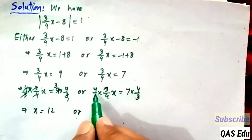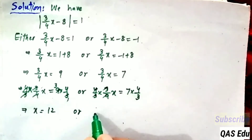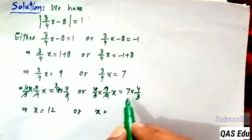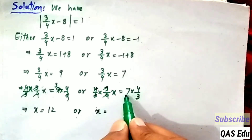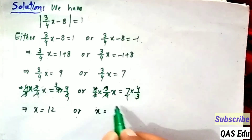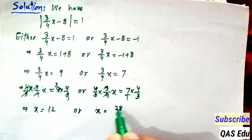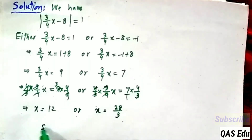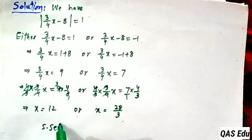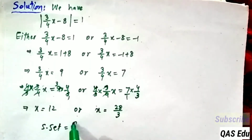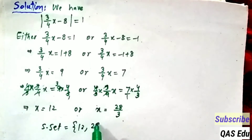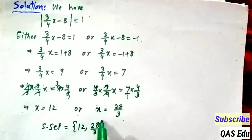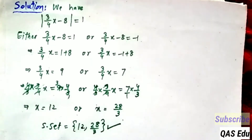For the second equation, similarly 4 and 4 cancel, leaving x. There is no common factor to cancel further. 1 times 7 is 7, and 4 times 7 gives 28 over 3. The solution set has two numbers: 12 and 28 over 3.